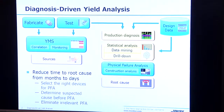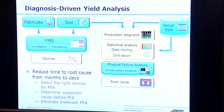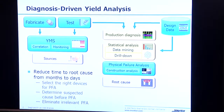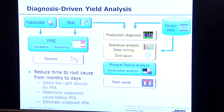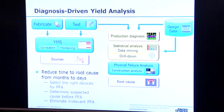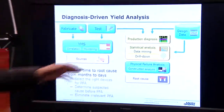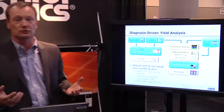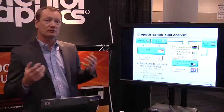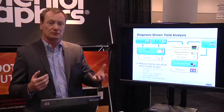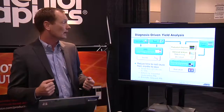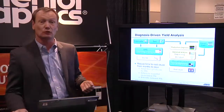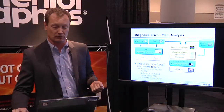To do that, we perform diagnosis on a larger number of failures — a larger number of devices failing manufacturing tests — and then we analyze and data mine these diagnosis results to find the devices that represent systematic defects and devices where we're most likely to be successful in FA.